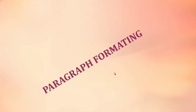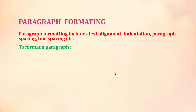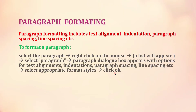First, we can discuss about paragraph formatting. Paragraph formatting includes text alignment, indentation, paragraph spacing, line spacing, etc. To format a paragraph, we can do the following steps: first, select the paragraph that we want to format, then right-click on the mouse. You will get a list; from that, select the option 'Paragraph.' The paragraph dialog box appears with options for text alignment, indentation, paragraph spacing, line spacing, etc. Selecting the appropriate format style, you can click the OK button, and the formatting will be applied.